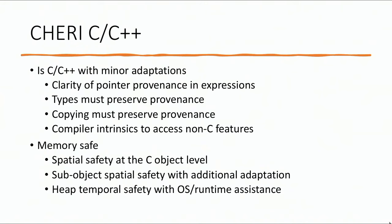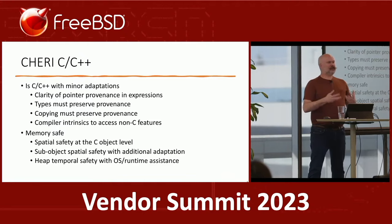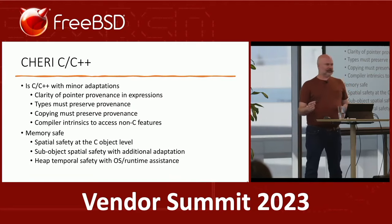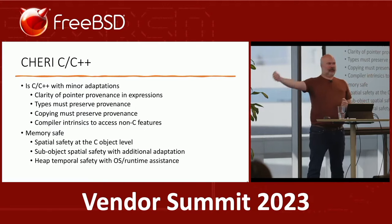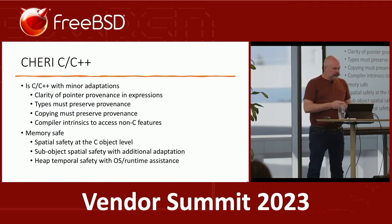There are some cases where you need to set bounds on memory allocations, and for those you need to use compiler intrinsics to access those instructions. Those are the cases where your code does become non-traditional C, but those changes are typically small. In many cases — for instance in our adaptation of the FreeBSD kernel — those changes can be hidden behind macros that are a no-op if you're not using CHERI. It's not always the case, but often it is.